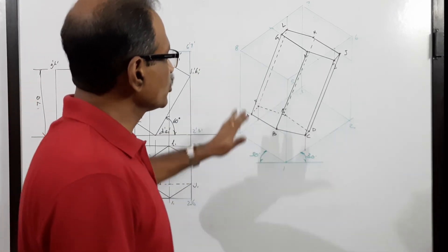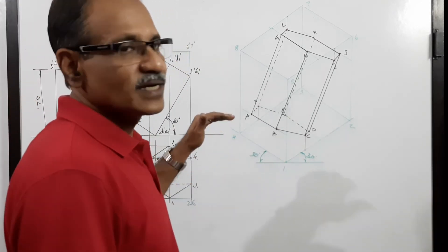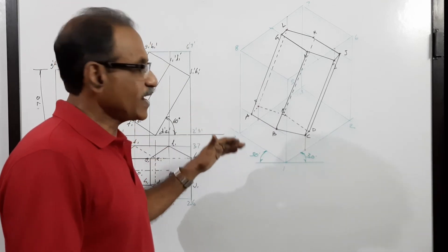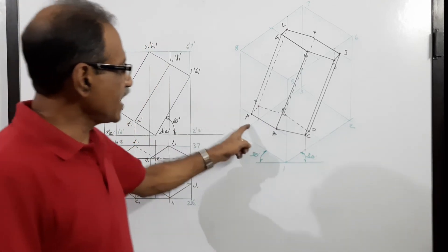After locating the points, you have to connect the visible edges carefully and the invisible edges by dotted lines.